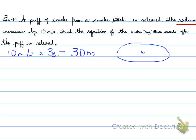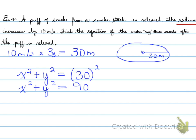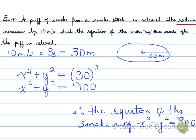That smoke ring has a radius of 30 meters. Let's use the formula. That would be x squared plus y squared equals 30 squared. x squared plus y squared equals 900. So this is the equation of the smoke ring 3 seconds after the puff is released. That's the end of the video. Hopefully you get the idea behind a circle. Take care.